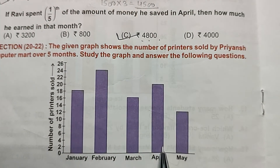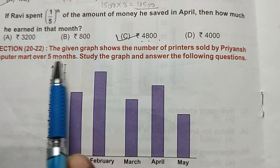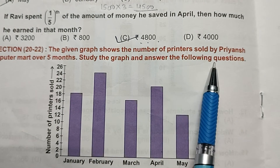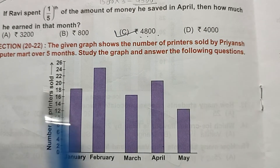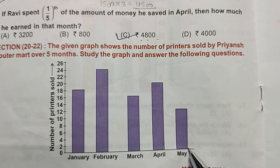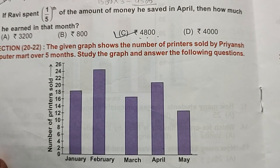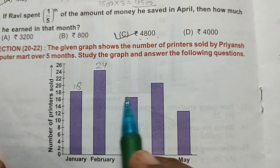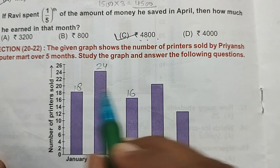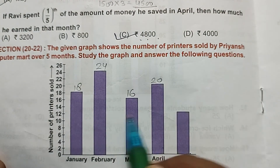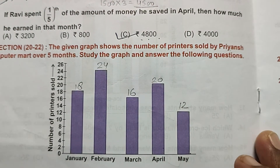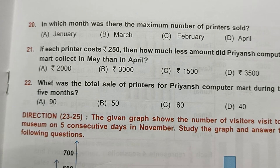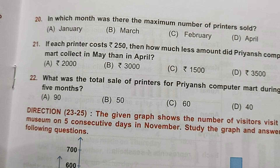Now the next paragraph is for questions 20 to 22. The given bar graph shows the number of printers sold by Priyansh Computer Mart over 5 months. January = 18, February = 24, March = 16, April = 20, May = 12. Question 20: In which month was the maximum number of printers sold? February had the highest bar — so option C is the answer.